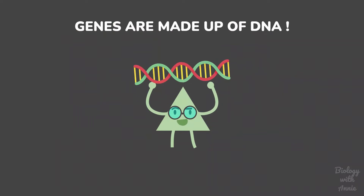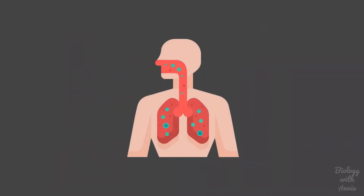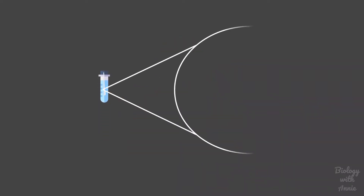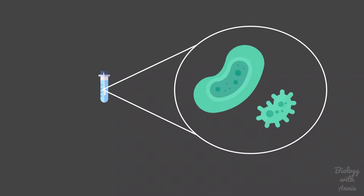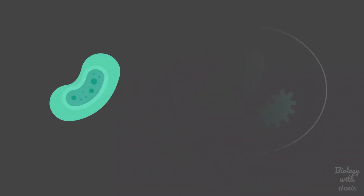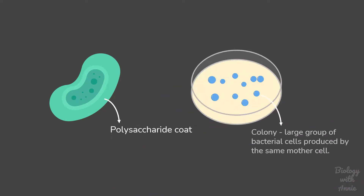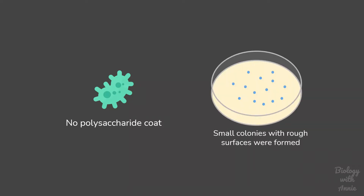To study the disease, Griffith had biological samples collected from patients having pneumonia. From this sample he isolated two strains of Streptococcus pneumoniae. One strain had a polysaccharide coat outside the cell wall, making the bacterial colonies large and smooth in appearance — this was called the smooth strain or S strain. The other strain could not synthesize this polysaccharide coat, forming small colonies with a rough surface, so it was called the rough strain or R strain.